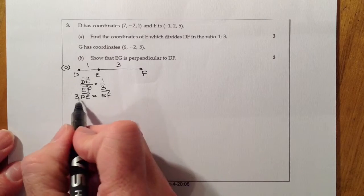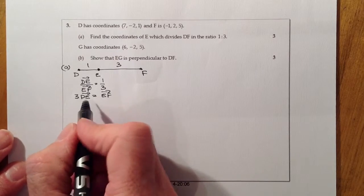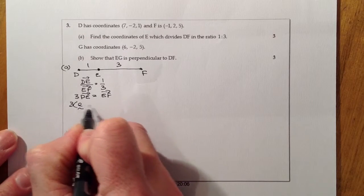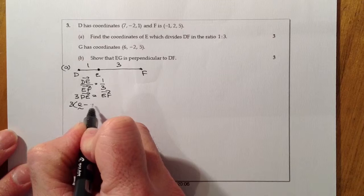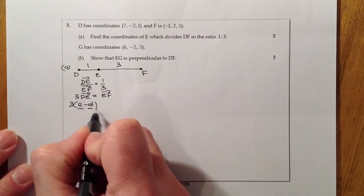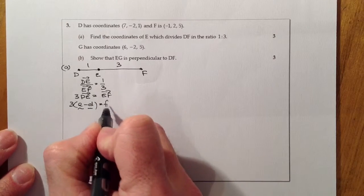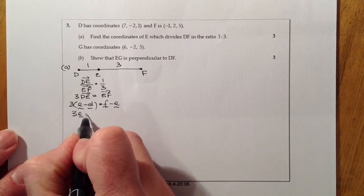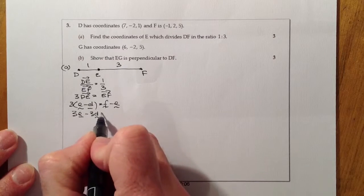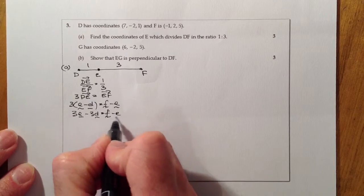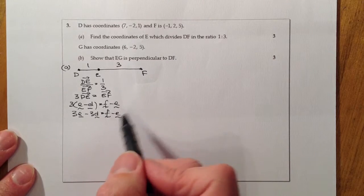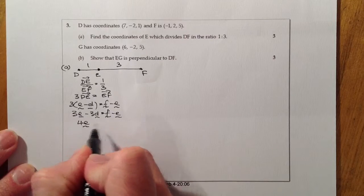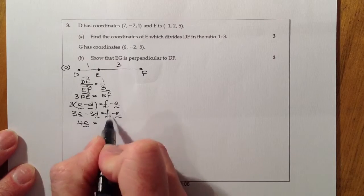From there, I multiply out by three using these vectors: 3(E - D) equals F - E. So I've got 3E - 3D equals F - E. E is what I'm trying to find, so get all Es on one side. Four E is going to equal F plus 3D.